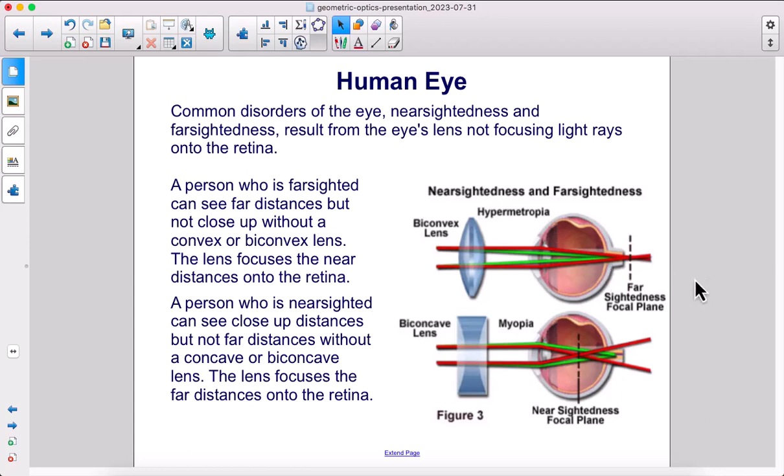A person who is nearsighted can see close up distances, but not far distances without a concave or biconcave lens. The lens focuses the far distances onto the retina.